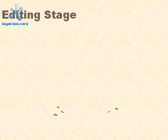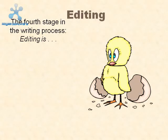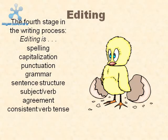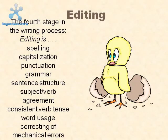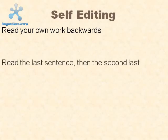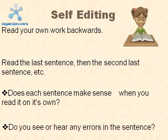The editing stage. Editing is the fourth stage in the writing process. Editing involves spelling, capitalization, punctuation, grammar, sentence structure, subject-verb agreement, consistent verb tense, word usage, and correcting mechanical errors. Activities include peer editing using a checklist and self-editing — for example, reading your writing backwards sentence by sentence to check if each sentence makes sense on its own and to catch errors.